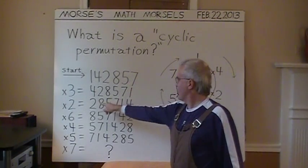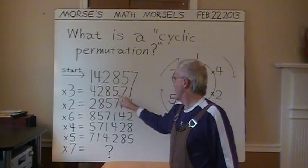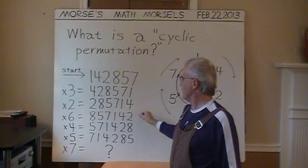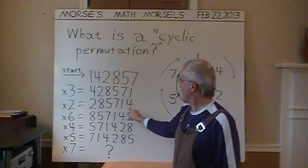Multiply 142857 by two. I'm just going to take the four in the front from this product and move it to the end. And this time, the two is in the lead, followed by the 85714.